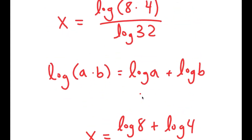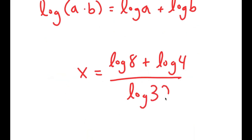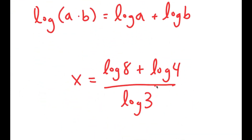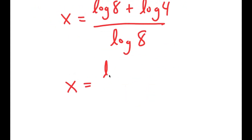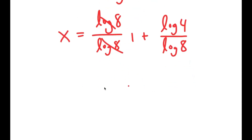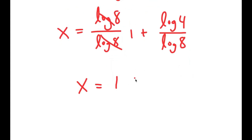And I have this over log of 8. This turns into log 8 over log 8 plus log 4 over log 8. These two log 8 terms cancel out to give 1, so I get x is equal to 1 plus log of 4 over log of 8.